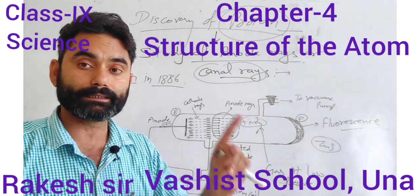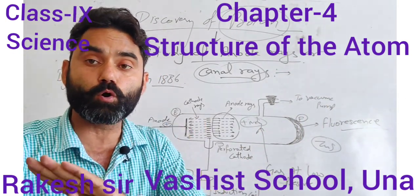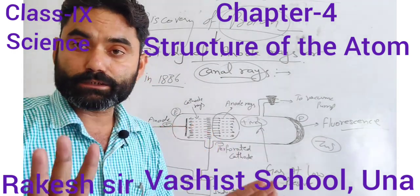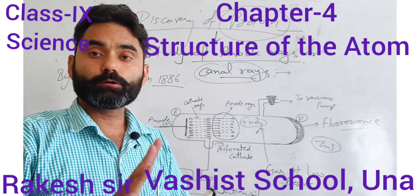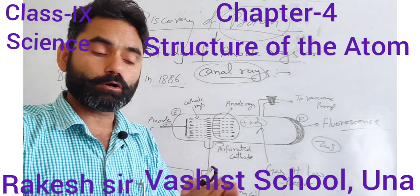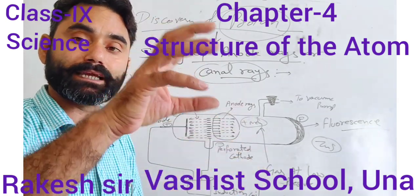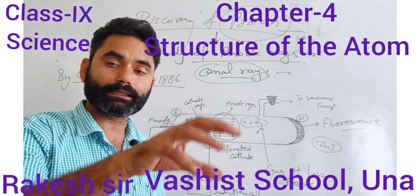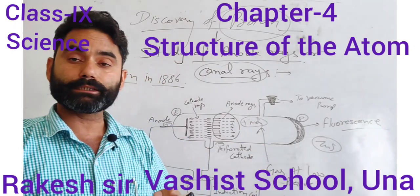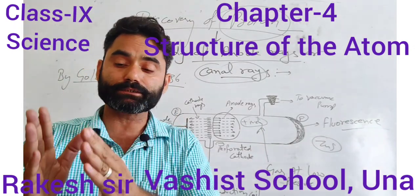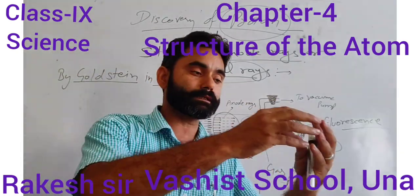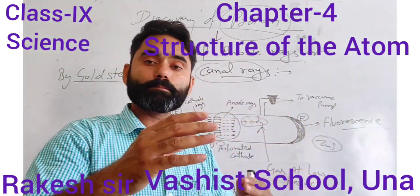The origin of anode rays is not from the anode terminal, unlike cathode rays whose origin is from the cathode terminal. Anode rays are produced during the bombardment of the cathode rays with the gaseous particles present inside the discharge tube.